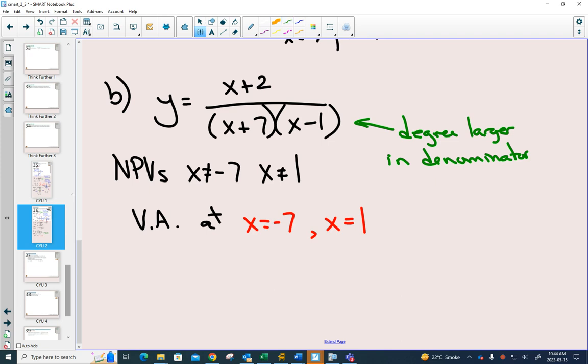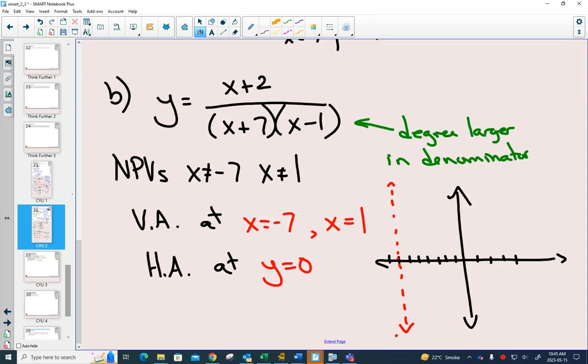Now that we've flipped it, we have a degree larger in our denominator. Any time your degree is larger in your denominator, your horizontal asymptote is at y equals 0. So we can start by graphing this. One vertical asymptote at x equals negative 7, another vertical asymptote at x equals 1, and a horizontal asymptote.